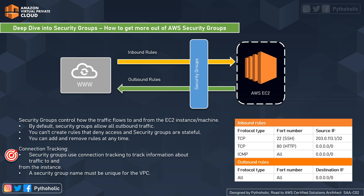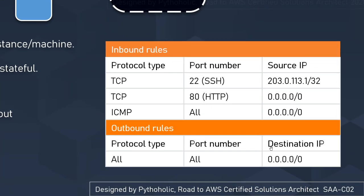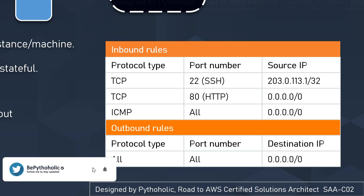A security group name is unique to a particular VPC. Let's check the example table, which shows both inbound and outbound rules. One important thing to note is that not all flows of traffic are tracked. If the security rule permits TCP port 80 for all traffic and from the other end allows all outbound traffic, then the flow of traffic is not tracked.